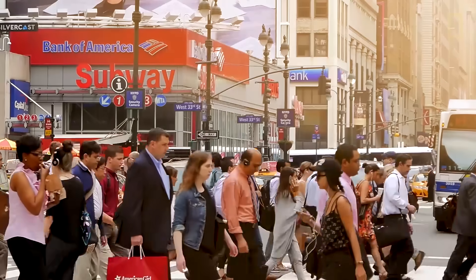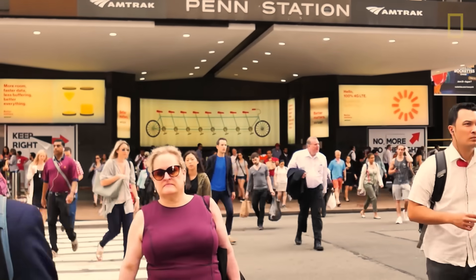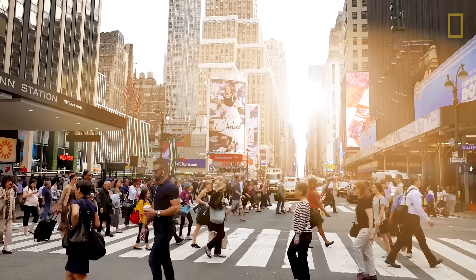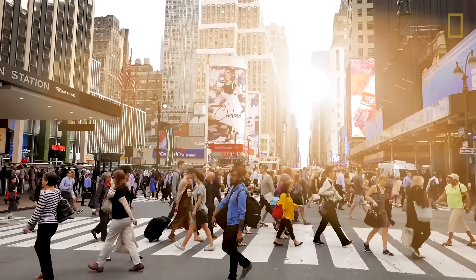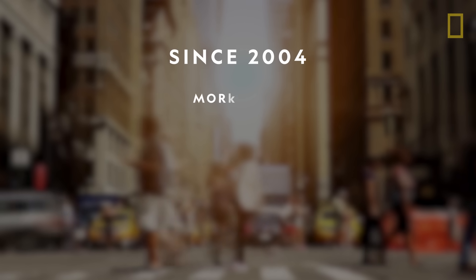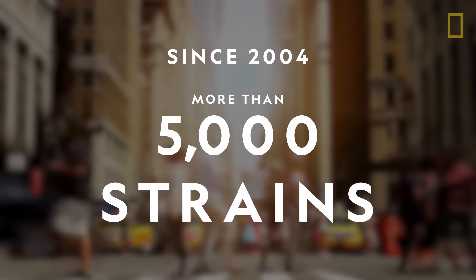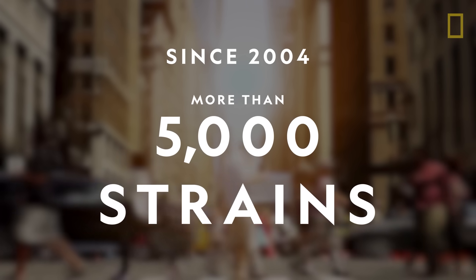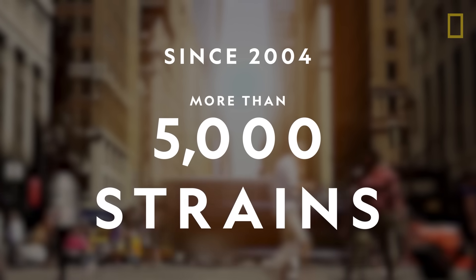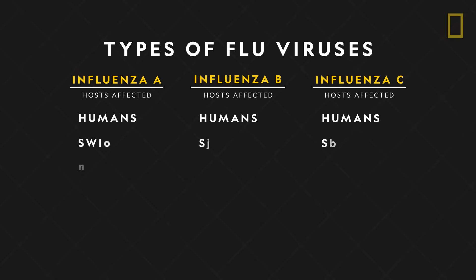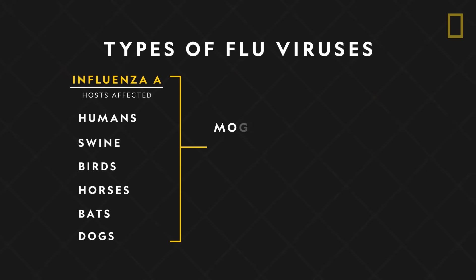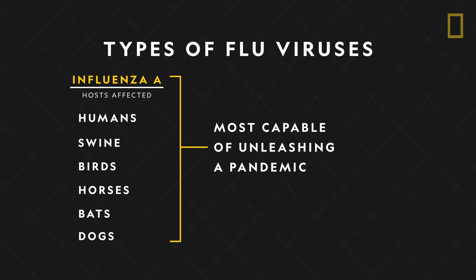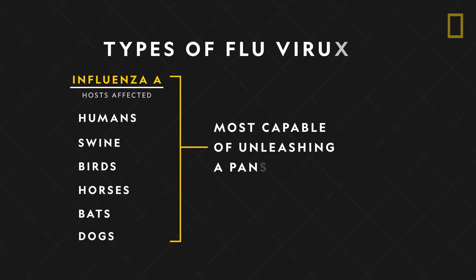The flu virus has been nearly impossible to eradicate, largely due to its uncanny ability to mutate. Since just 2004, more than 5,000 different strains of the influenza virus have been sequenced. Those that affect humans are categorized as types A, B, or C, with type A strains being the most capable of unleashing a pandemic.